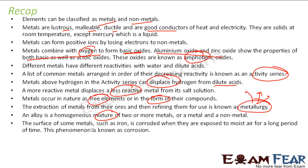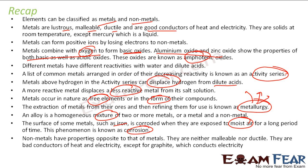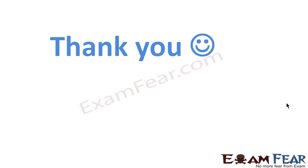Alloy is nothing but a homogenous mixture of two or more metals or metal or non-metals. It has different properties. The surface of some metals such as iron is corroded when they are exposed to moist air for a long time. And this phenomenon is called corrosion. Non-metals have the property exactly opposite of metals. They are neither malleable nor ductile. They are bad conductors of heat except graphite which is good conductor. Thank you.